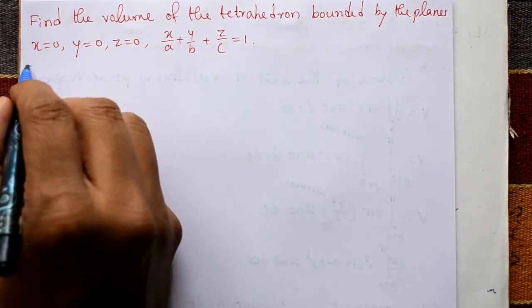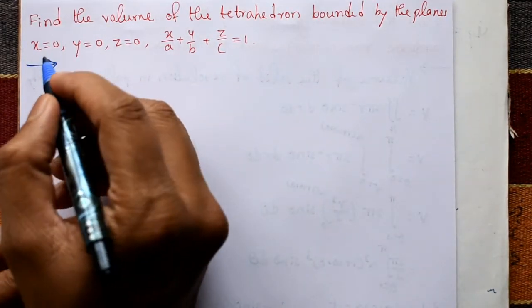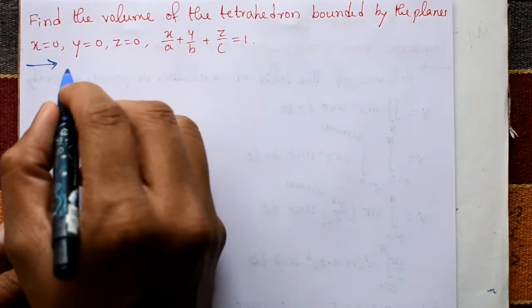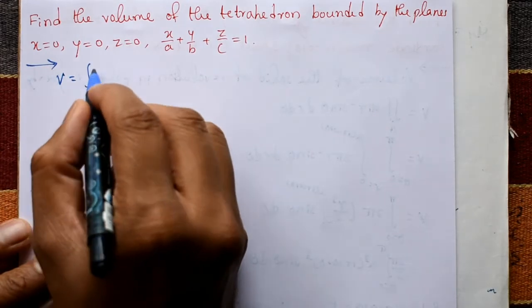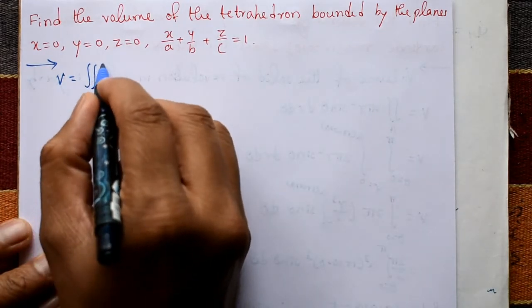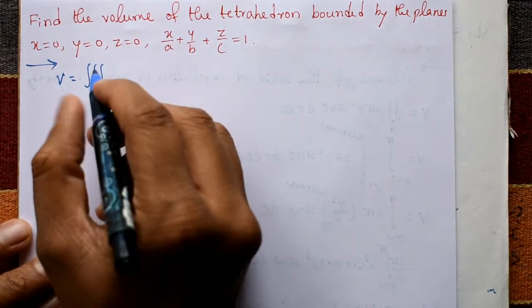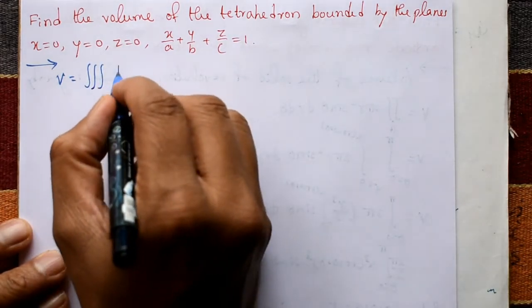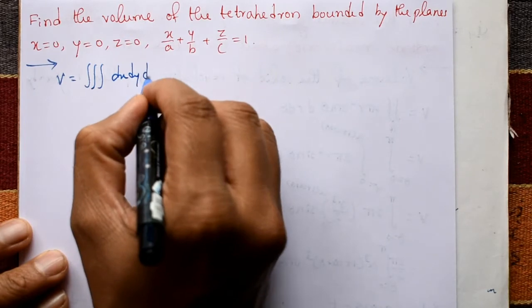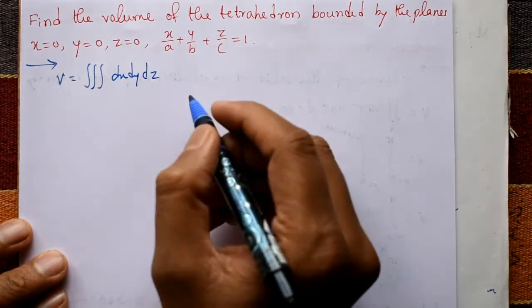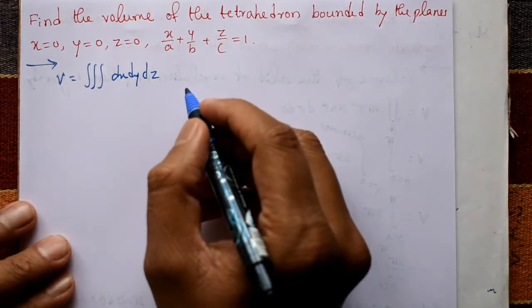This example is very simple. The volume V is equal to the triple integration with respect to x, y, and z.